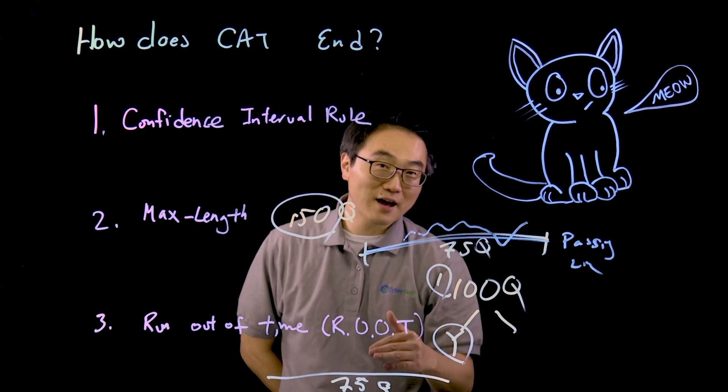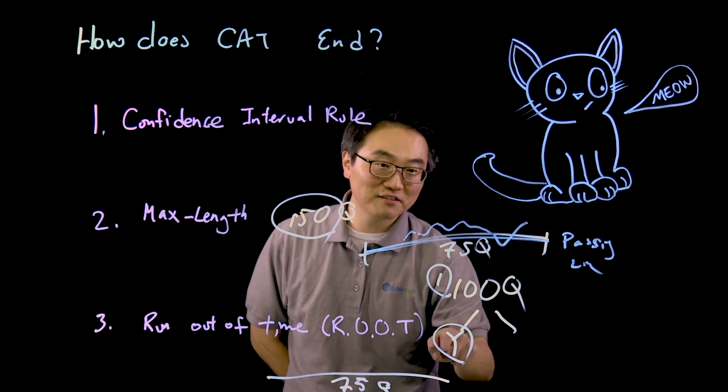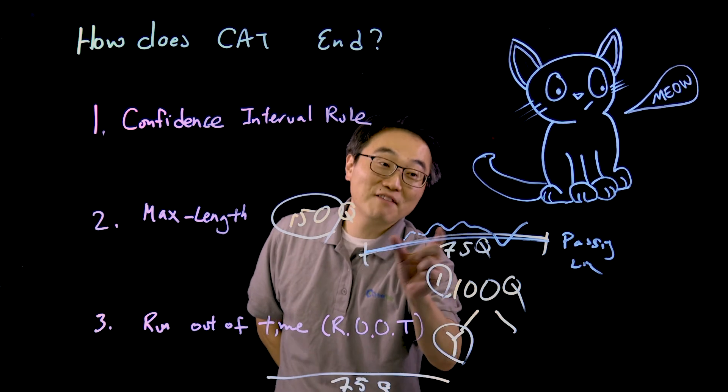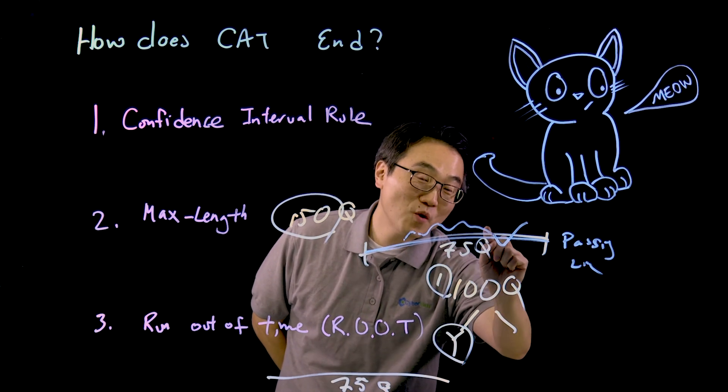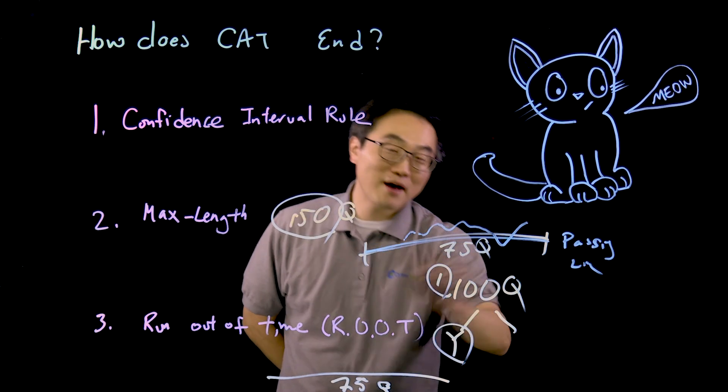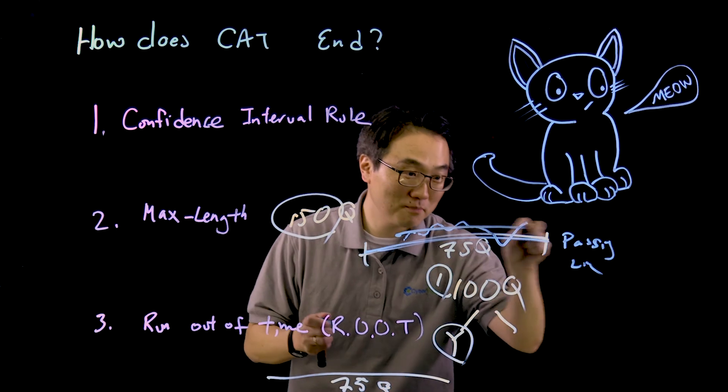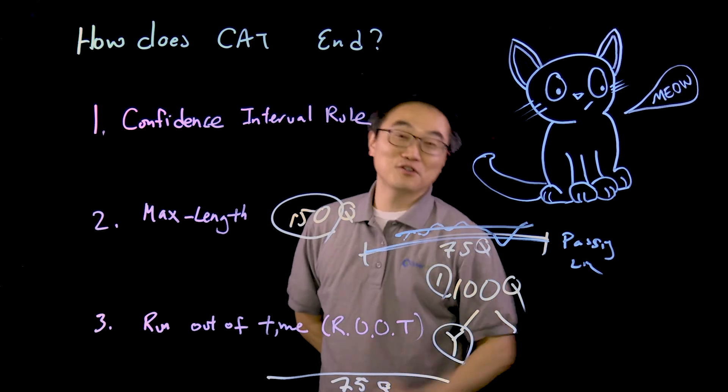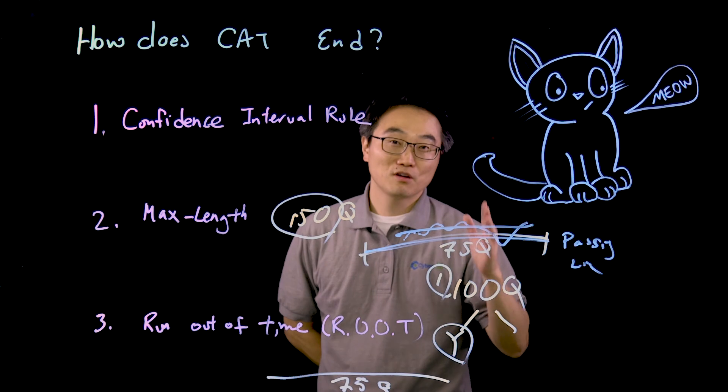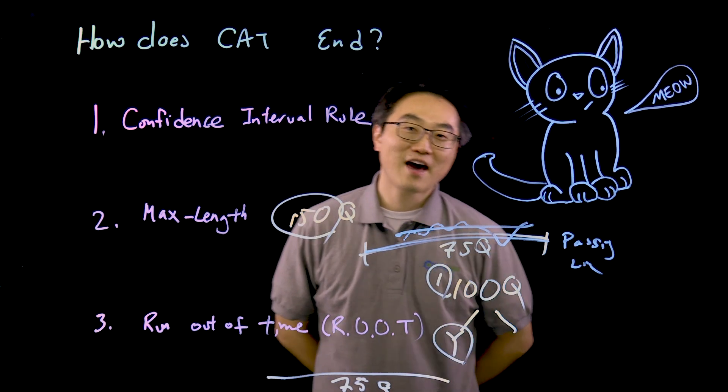Run Out Of Time: you ran out of time. First rule is have you answered 100 questions? If yes, look at your last 75 questions back and see if at any point you went below the passing line. If you did, fail. If you didn't, you passed. If you did not answer 100 questions by the time you run out of time, you fail. Those are the three ways that CAT can end.